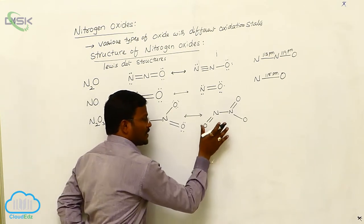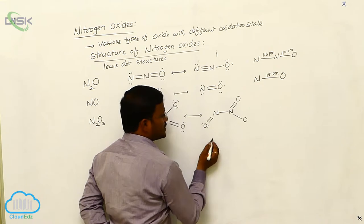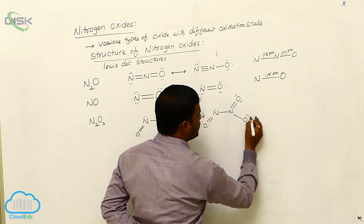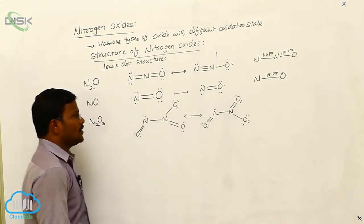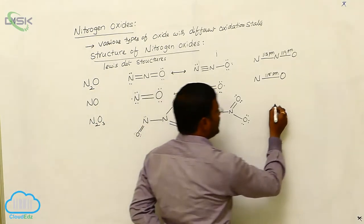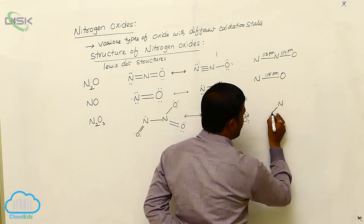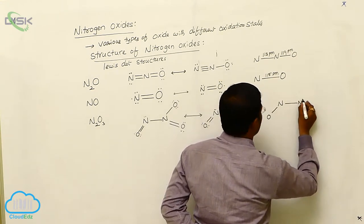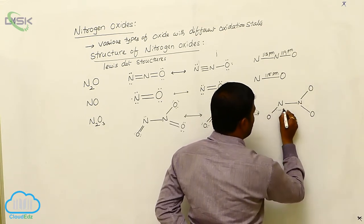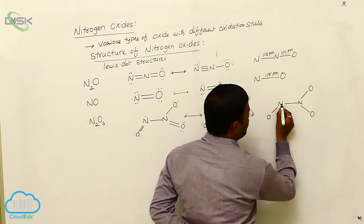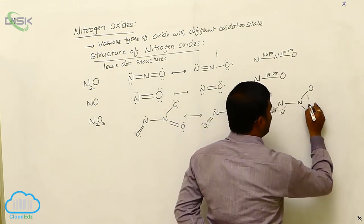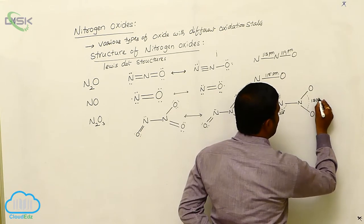In its resonance form, there are two pairs of non-bonding electrons on each relevant atom, and the terminal oxygen has three pairs of non-bonding electrons. This is the Lewis dot structure of N₂O₃. The bond angle present in the O–N–N arrangement is nearly 107 degrees, and the bond angle in the N–O portion is 130 degrees.